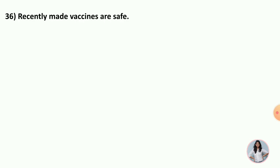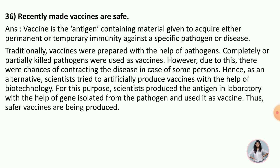Next question: Recently made vaccines are safe. A vaccine is an antigen-containing material given to acquire either permanent or temporary immunity against a specific pathogen or disease. Traditionally, vaccines were prepared with the help of pathogens — any viruses, bacteria, and fungi which cause disease are called pathogens. Completely or partially killed pathogens were used as a vaccine; they were injected in the body so that the body would prepare antibodies against them.